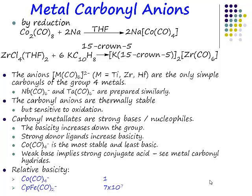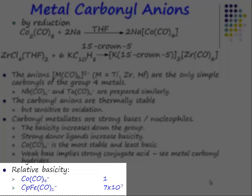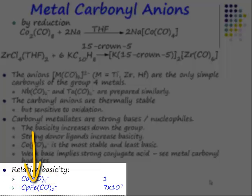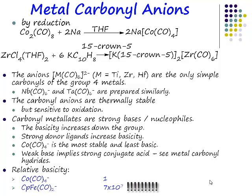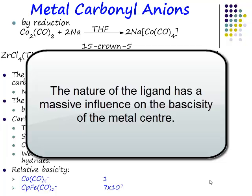If you replace one of those carbonyl ligands with a better donor — something that increases the electron density on the metal centre — you make your metal centre a stronger base. In this table, if cobalt tetracarbonyl anion has a relative basicity of one, and you go from cobalt to iron and replace the CO ligands with a CP ligand — a much better donor and much poorer acceptor — you get a 70 million fold increase in the basicity of the metal centre, essentially just by switching ligands.